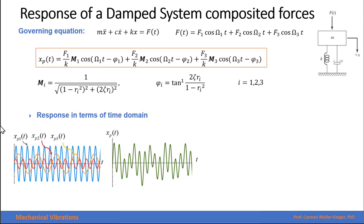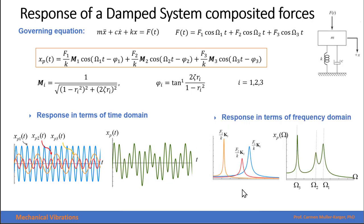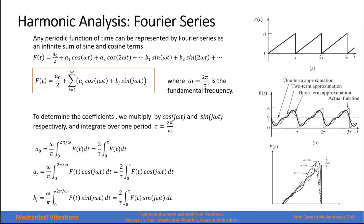We can view this response in the time domain as plotted here, but we can also see it in the frequency domain. In the frequency domain graph, for frequency one we have a corresponding amplitude, for frequency two we have this amplitude, and for frequency three we have this amplitude. Now let's go to the definition of the Fourier series.